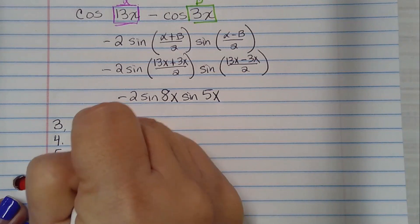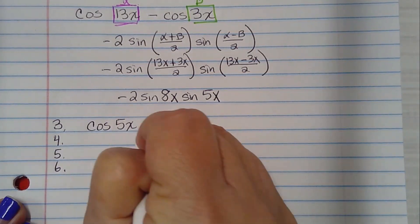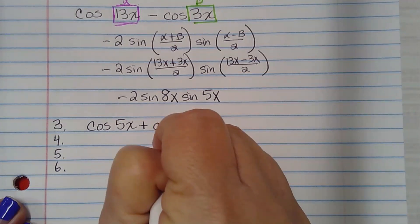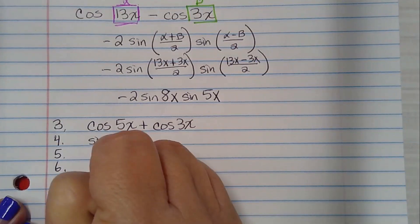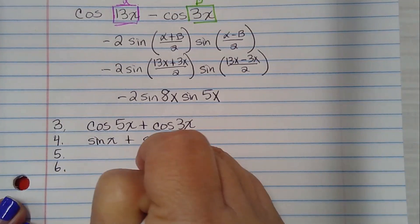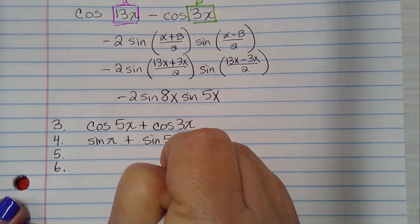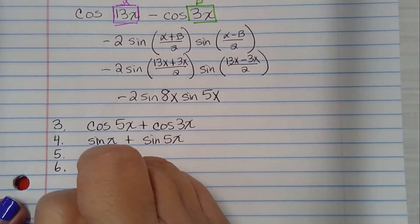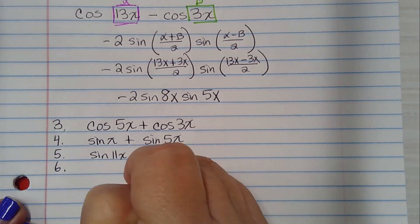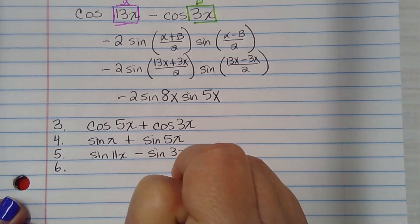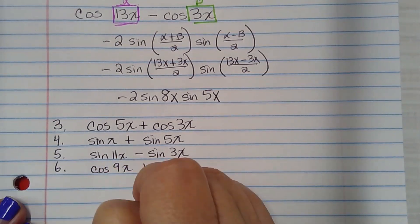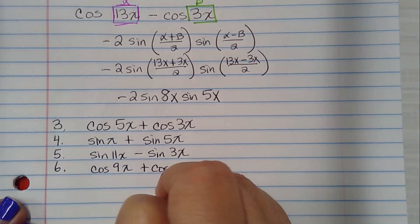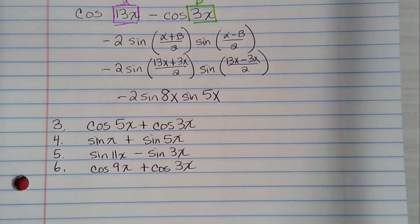It's cosine 5x plus cosine 3x. Number 4 is sine x plus sine 5x. Number 5 is sine 11x minus sine 3x. And number 6 is cosine 9x plus cosine 3x. So you will do those 4 problems for homework. Thank you.